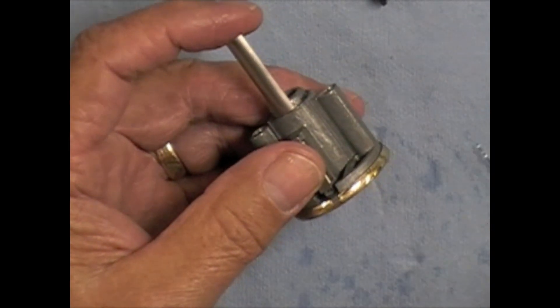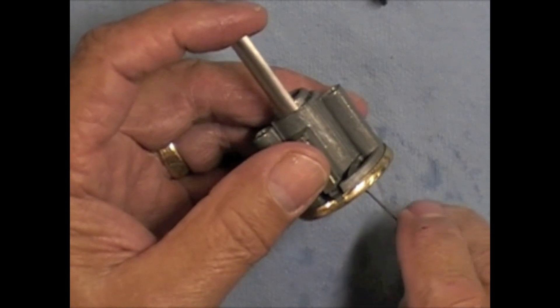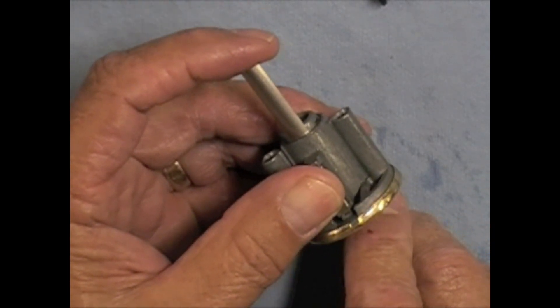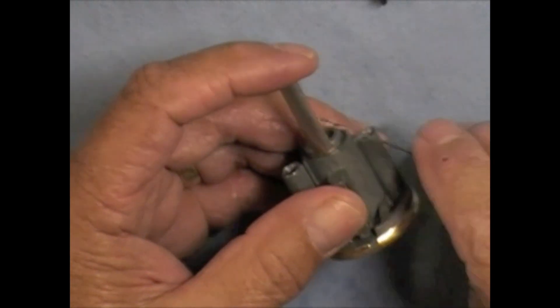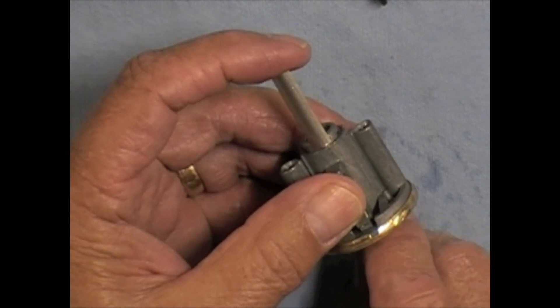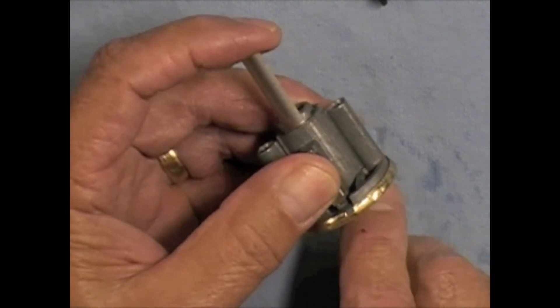And we're going to use a rake pick and we're going to just go in there and gently rake those pins and see if we can get that shim stock to slide in there between the top pin and the bottom pin.